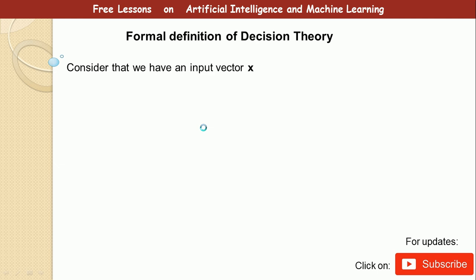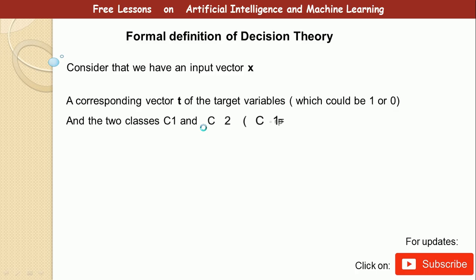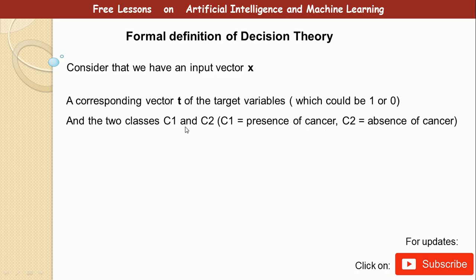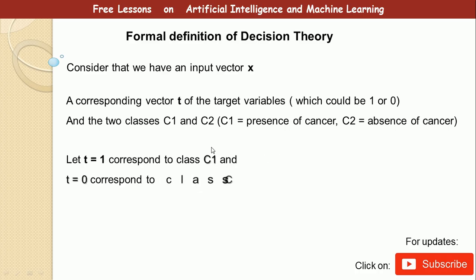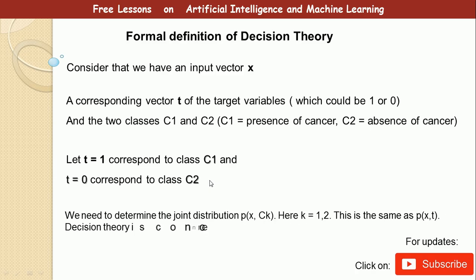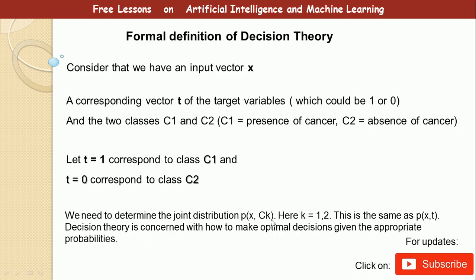For the formal definition of decision theory, consider an input vector x consisting of a series of values and a corresponding vector t of target variables. In supervised learning, you have training data made up of input vectors and corresponding target vectors. We have two classes, c1 and c2. In cancer diagnosis, c1 means presence of cancer and c2 means absence of cancer. Let t=1 correspond to class c1 and t=0 correspond to class c2. We need to determine the joint probability distribution p(x, ck) where k equals one or two.